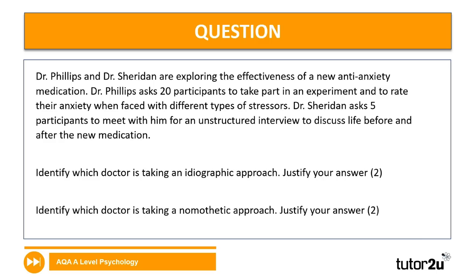Let's look at the next question. We have a stem: Dr. Phillips and Dr. Sheridan are exploring the effectiveness of a new anti-anxiety medication. Dr. Phillips asked 20 participants to take part in an experiment and rate their anxiety with different stressors. Dr. Sheridan asks five participants for an unstructured interview to discuss life before and after the medication. You have to identify which doctor takes an idiographic approach — one mark — and justify your answer for the second mark. The same structure applies for identifying the nomothetic approach.